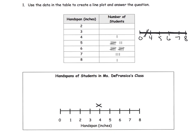So we've got seven for five inches — one, two, three, four, five, six, seven. Then we've got ten for six inches — one, two, three, four, five, six, seven, eight, nine, ten. I'll make those in a different color so we don't lose them in the text. Then we've got three for seven inches — one, two, three.